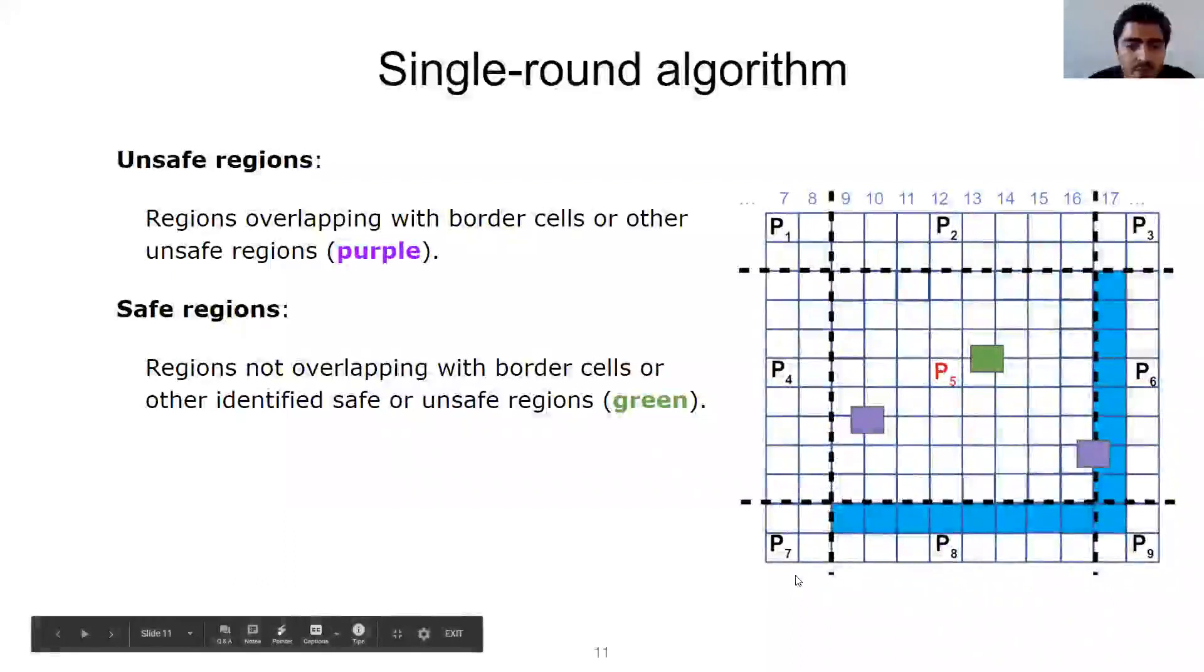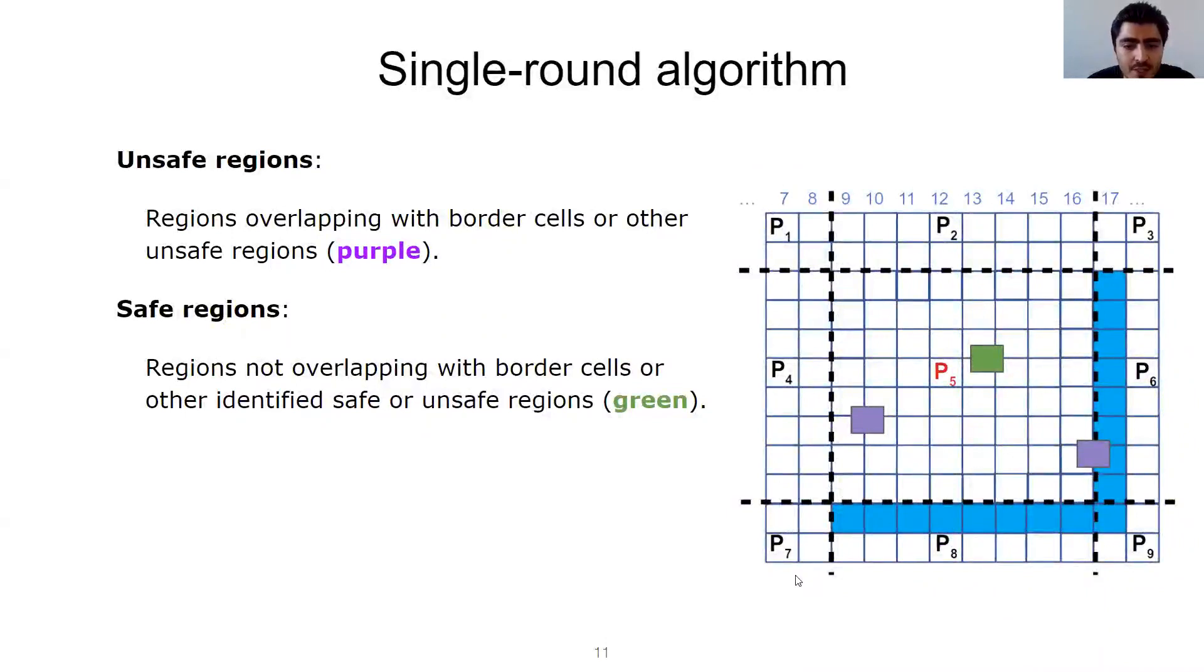Let's now see how the single-round algorithm avoids this repetition and improves performance. In a nutshell, the algorithm works by having each worker compute potentially more than K local results per partition. To demonstrate the algorithm, you need a couple of basic concepts: unsafe and safe regions. The unsafe regions are the ones that have a sufficiently high score to be included in the partition's top K results, but they may be having an overlap with other regions that have higher scores, which potentially belong to other partitions and are computed by other nodes. These are the regions that overlap with the border cells of the partition or with other unsafe regions. Here, you see two unsafe regions depicted in purple. Then, you have safe regions, which are the regions that do not overlap with any other regions of the highest score, either safe or unsafe. Here, you have one safe region depicted in green.